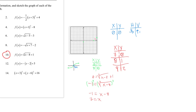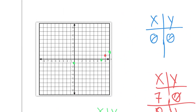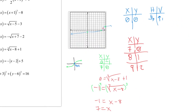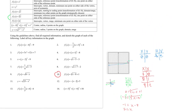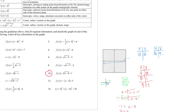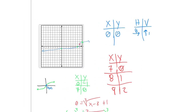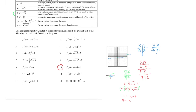The cube root graph goes from negative infinity up through the reference point and continues to positive infinity. Domain is (-∞, ∞) and range is also (-∞, ∞). Both are all real numbers, since cube root functions extend infinitely in both directions.